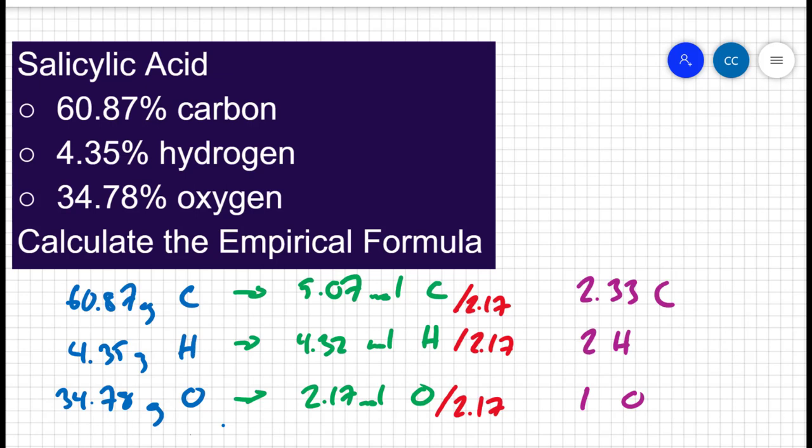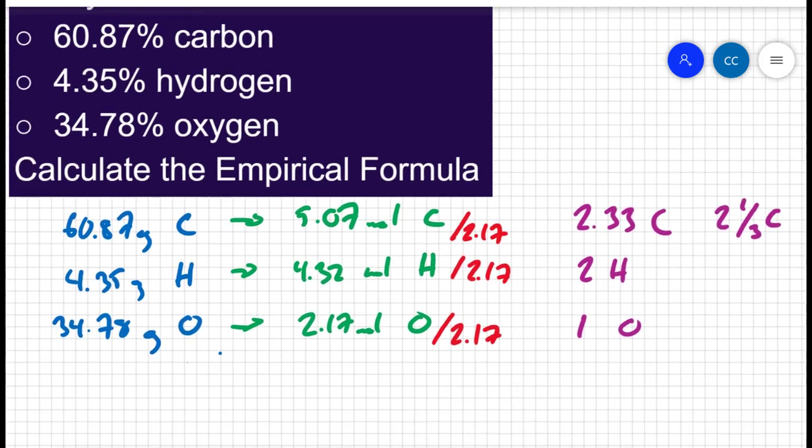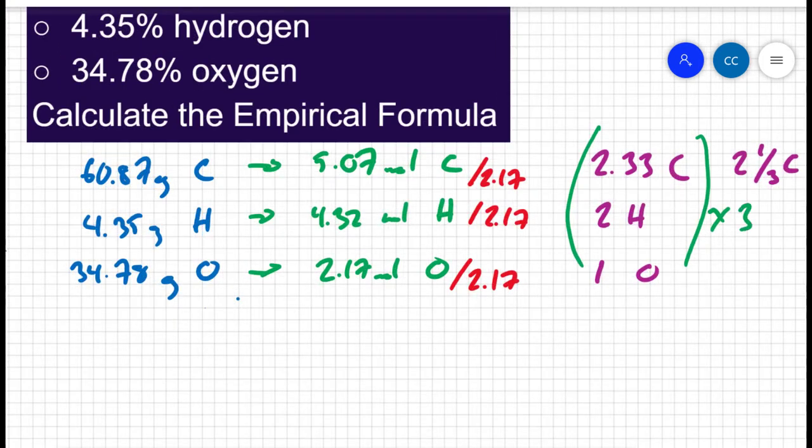However, when I see 2.33 carbons, I think of two and a third carbons. That means if I multiply everything by 3, I can clear that fraction. So let's multiply all my decimals by 3.